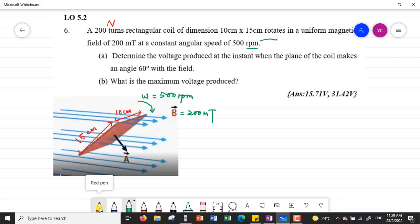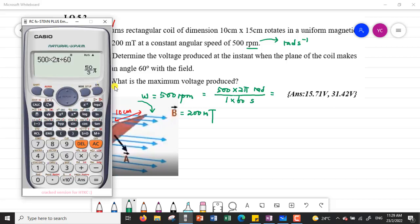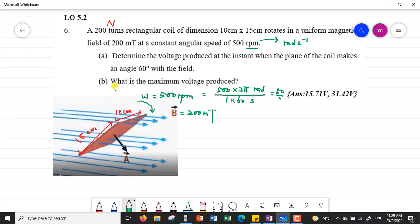So rpm is not SI unit, we have to change it to radians per second. One revolution is equivalent to 2π, one minute is equivalent to 60 seconds, so we have 1 times 60, change it to seconds, so we have 50 over 3π radians per second. We have to do the unit conversion for angular speed.